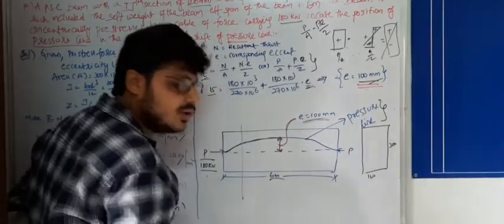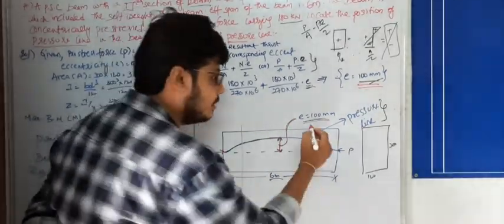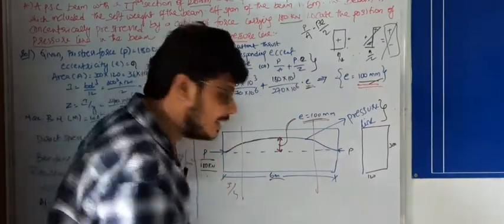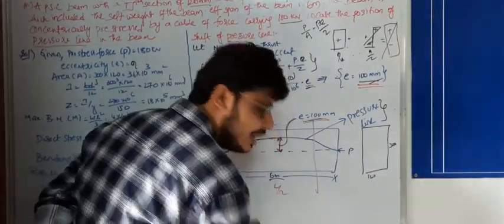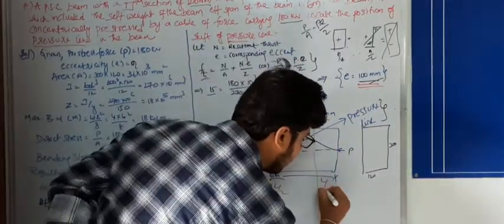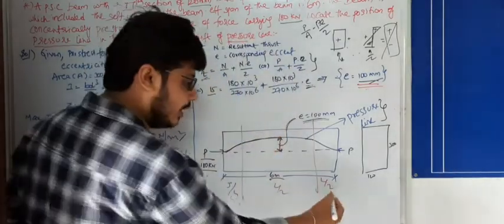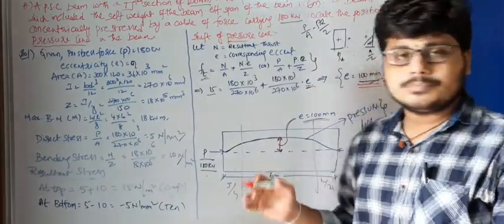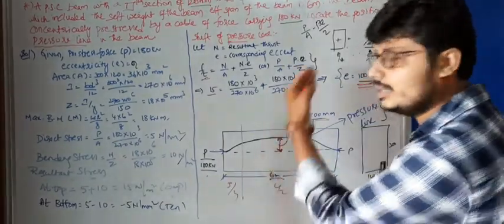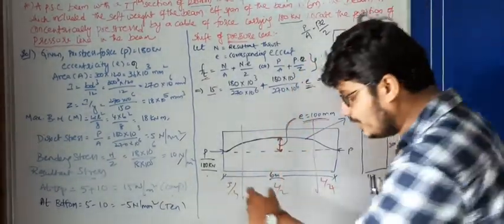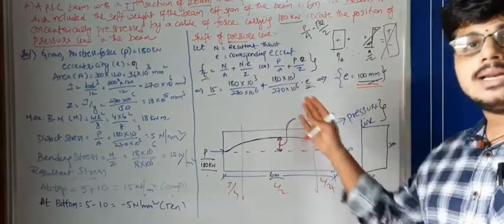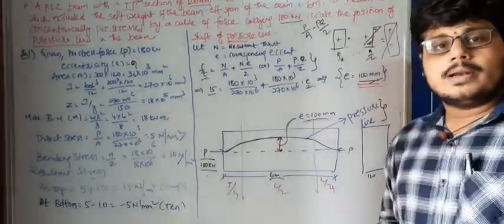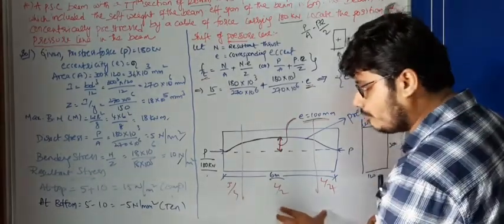For the full span L, there is one pressure value. At mid-span L/2, there is another pressure value. At quarter span L/4, there is one pressure value, and at three-quarter span 3L/4, there is another. Exam questions may ask: locate the pressure line at mid-span, or at quarter span, or at three-quarter span — and you must calculate the values at those positions.